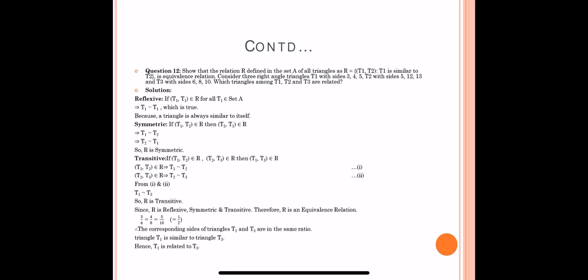Similar triangles are those where the ratio of corresponding sides is the same. For T1 and T3: check 3/6, 4/8, and 5/10 — after simplifying, each equals 1/2. The ratio of corresponding sides of T1 and T3 are the same, therefore T1 is similar to T3. Hence T1 is related to T3.